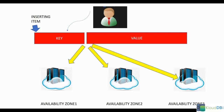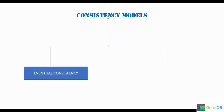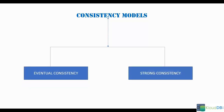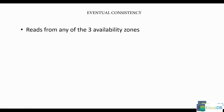That's why we have two different consistency models. One is called eventual consistency, and the second is called strong consistency. We're going to explore the difference between eventual consistency and strong consistency, and when to use eventual versus when to use strong.